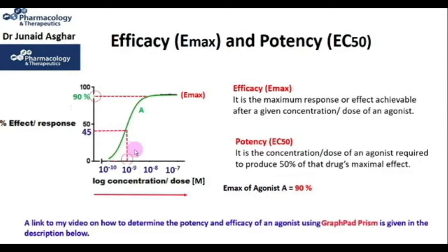Now let's see what is potency or EC50. Potency is the concentration or dose of an agonist required to produce 50 percent of that drug's maximal effect.